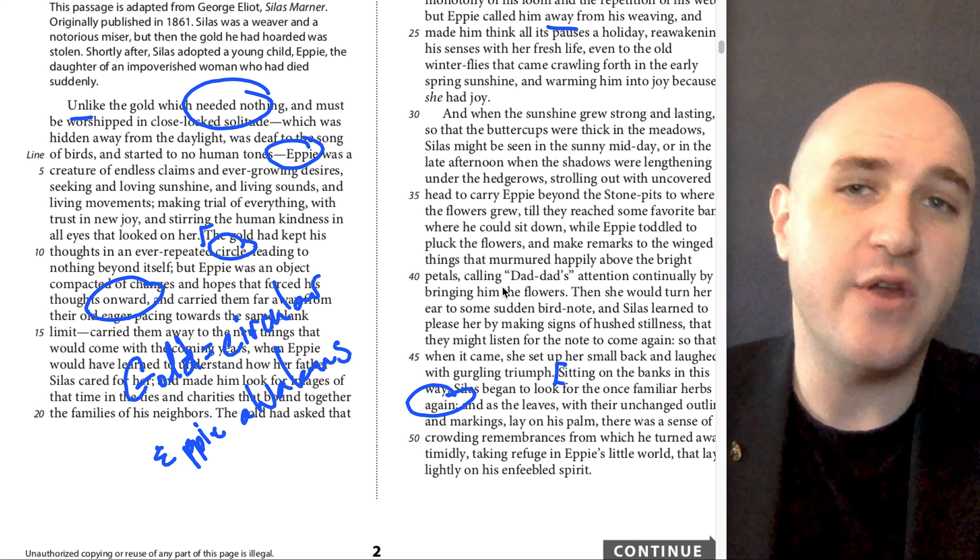Epi is calling dad's attention by bringing him flowers. Then we've got this sitting on the banks in this way, Silas began to look for the once familiar herbs again, and as the leaves with their unchanged outline and markings lay on his palm, there's a sense of crowding remembrances. So he's remembering the past by being out in nature with Epi.